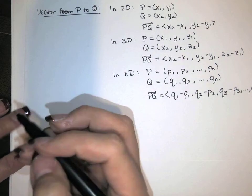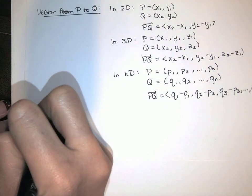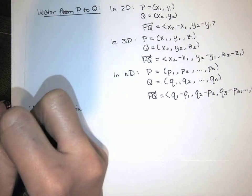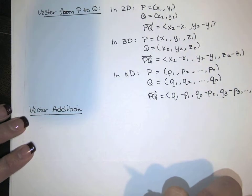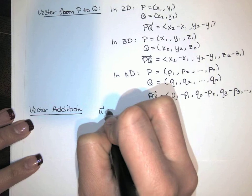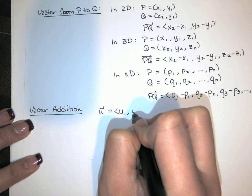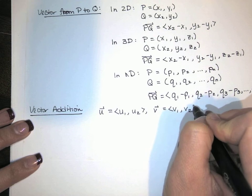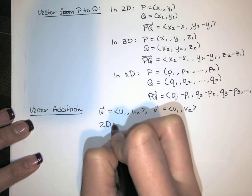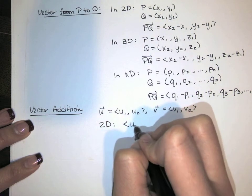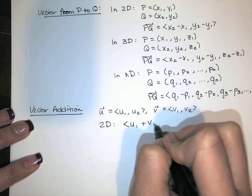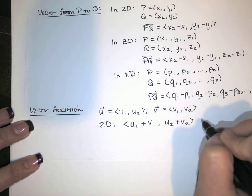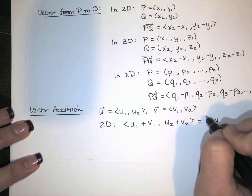Vector addition is the same. It's just exactly what you would expect. We add component by component. So if u has components u1 and u2, and v has components v1 and v2. In 2D, you've got u1 plus v1, and u2 plus v2. That's your new vector, u plus v.